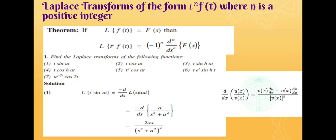Welcome to the session on Laplace transform of the form t^n into f(t), where n is a positive integer. If the Laplace transform of f(t) equals F(s), then the Laplace transform of t^n·f(t) is equal to (-1)^n times d^n/ds^n of F(s).